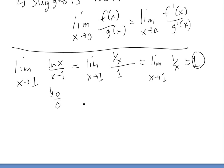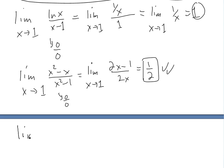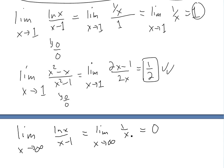This is even easier than doing the (x² - x)/(x² - 1) example, where we had to factor out. Now since it's 0/0, we just take the derivative directly. Using L'Hôpital's Rule on that one: derivative of (x² - x) is (2x - 1) and derivative of (x² - 1) is 2x, giving (2x - 1)/(2x). Put 1 in: (2 - 1)/2 = 1/2. And for the limit as x → ∞ of ln(x)/x, we get 1/x divided by 1, which goes to 0.